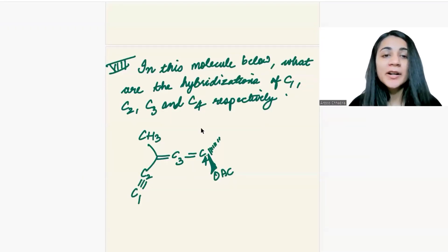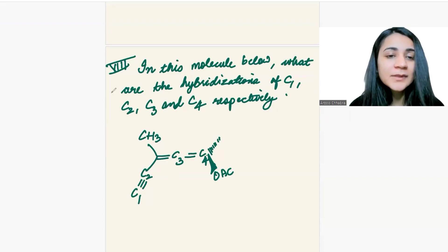Okay, so this is part 8 of a 10-part series of MCAT problems. The question is, what is the hybridization of C1, C2, C3, and C4 carbons in this molecule?